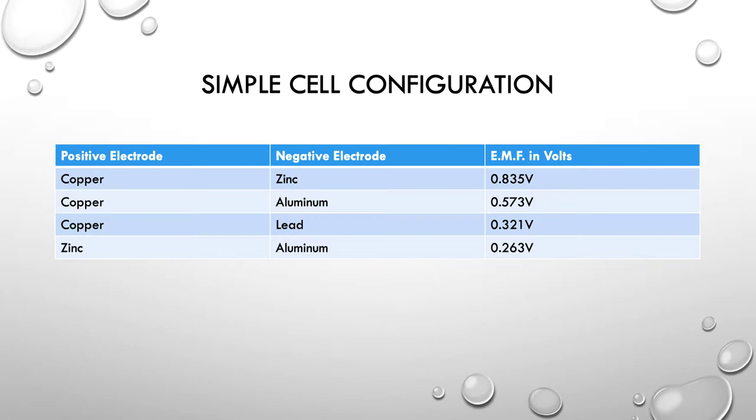So obviously if you wanted to build a cell a battery of some kind using these kinds of equipment the copper zinc is going to be your best go. It's going to offer you the best potential difference or the best EMF.